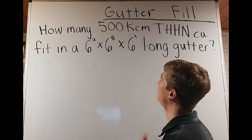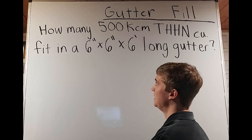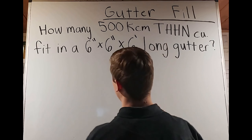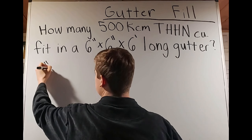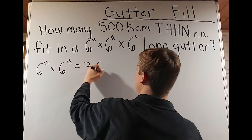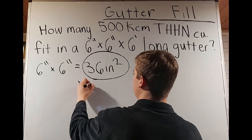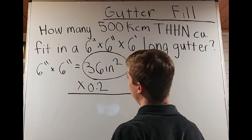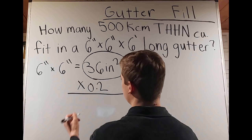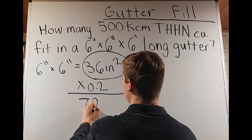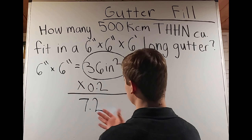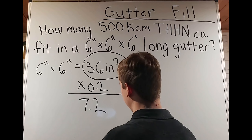Next question: how many 500 KCMIL THHN copper conductors fit in a 6-inch by 6-inch by 6-foot-long gutter? We disregard the 6-foot length and do 6 inches times 6 inches, which gives us 36 square inches. Then we take 20% of that. A quick mental trick: 36 times 2 is 72, and taking 20% gives 7.2 — and 7.2 makes sense as the decimal placement. Punching it into a calculator confirms 7.2 square inches of available space for this 6-by-6 gutter.